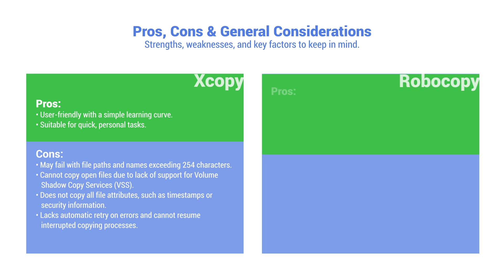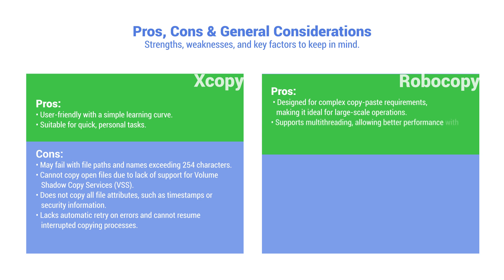Robocopy. Pros: Designed for complex copy requirements, making it ideal for large-scale operations. Supports multi-threading, allowing better performance with multiple CPU processors, even for large files and directories. Faster alternative in most cases, with a retry option on errors.